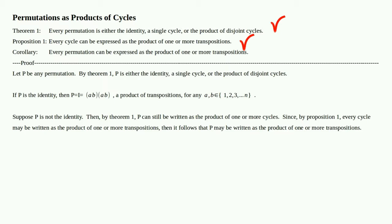Since by Proposition 1 every cycle may be written as the product of one or more transpositions, it follows that p may be written as the product of one or more transpositions. So: p is not the identity — well, then it's a cycle or a product of cycles.